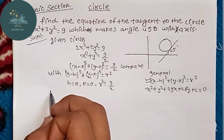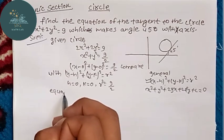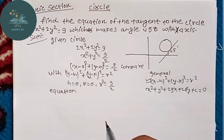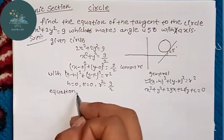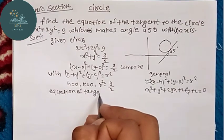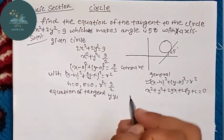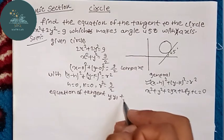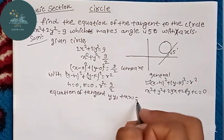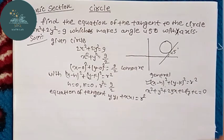Okay, equation of tangent. The formula is: y·y₁ plus x·x₁ equals r squared. So the formula for the tangent of the circle.